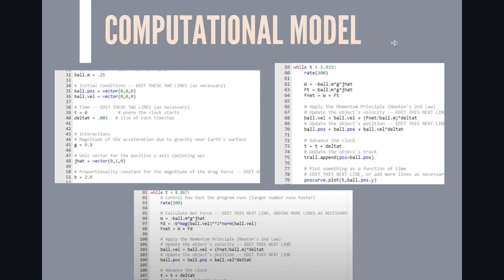This is the code that we use in GlowScript for our computational model. We have the position and velocity vectors that start at the origin. We have the time, the change in time, the gravity, the unit vector for the positive y axis as well as the proportional constant for the magnitude of the drag force.